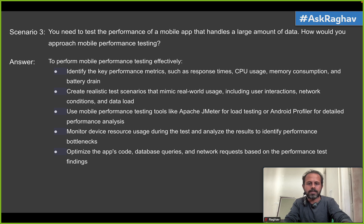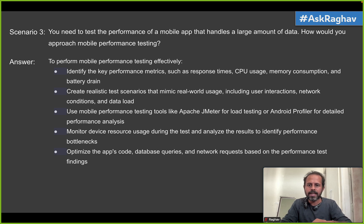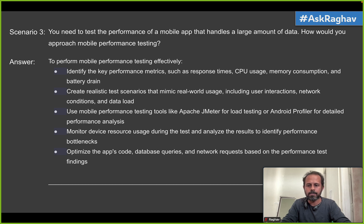After you have done your performance test, based on the findings you can take help from your team or send your results to the next team, and then perform optimizations such as app code optimization, database query optimization, and network request optimization based on the results. That's how you will perform performance testing on a mobile app.